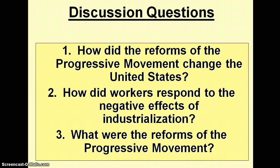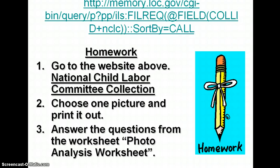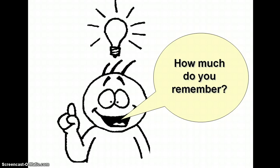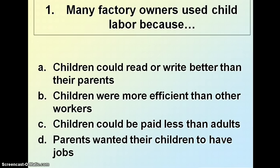You may discuss this with somebody. Don't worry about the homework part — here are your questions. I'll read through them and you'll answer on your sheet. You have questions one through six. Question one: many factory owners used child labor because — A, children could read or write better than their parents; B, children are more efficient than other workers; C, children could be paid less than adults; or D, parents wanted their children to have jobs. Write it down.